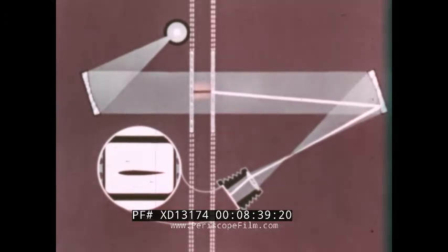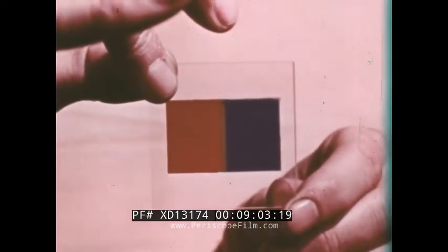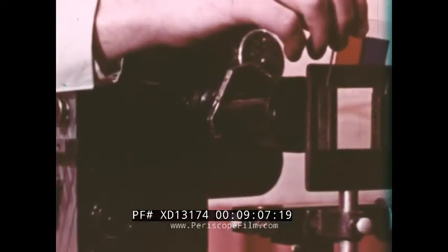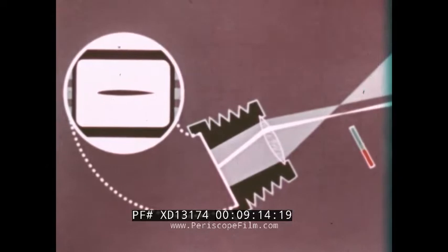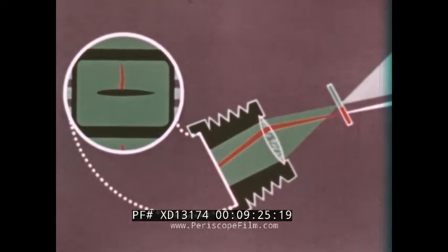The light that has been bent by passing through the shock wave does not go through the same point as the unbent light. It is here at the focal plane of the mirror that the bent light can be identified. This is done by means of a color filter. The filter consists of strips of colored glass or gelatin. It is put in the focal plane. When the filter is correctly adjusted, all the unbent light goes through the central green strip. The ray that has been bent now goes through the red part of the filter. So, on the film, the shock wave appears red.